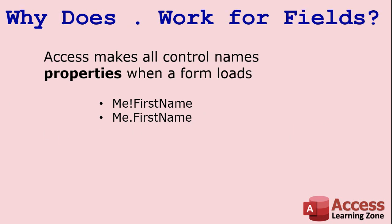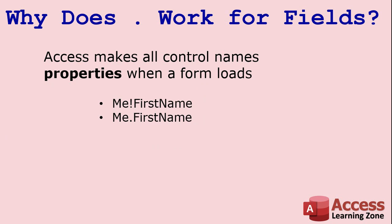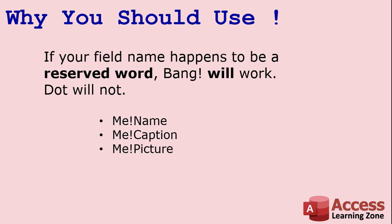You might say, "Rick, I've been using me.FirstName forever and it works." Yes, it'll work some of the time but not all of the time and not reliably. Why does it work? Because Access is doing you a favor — when a form loads up, Access will make all of the controls properties of that form as a shorthand. So me.FirstName will work most of the time, but not all of the time. Don't get used to it.